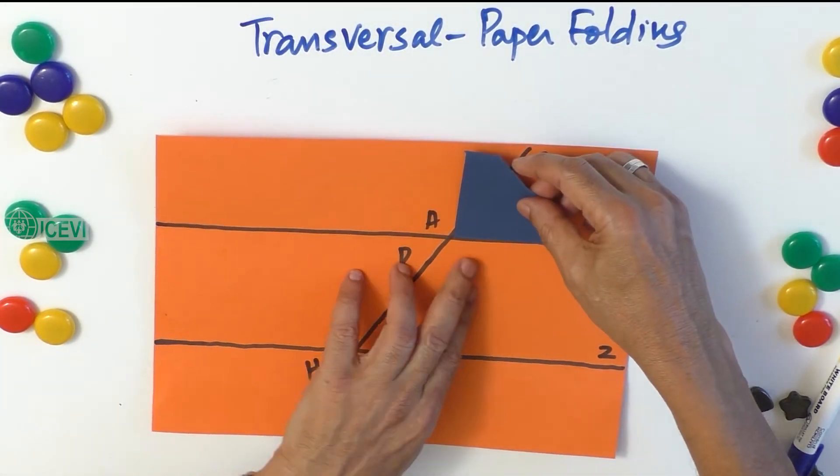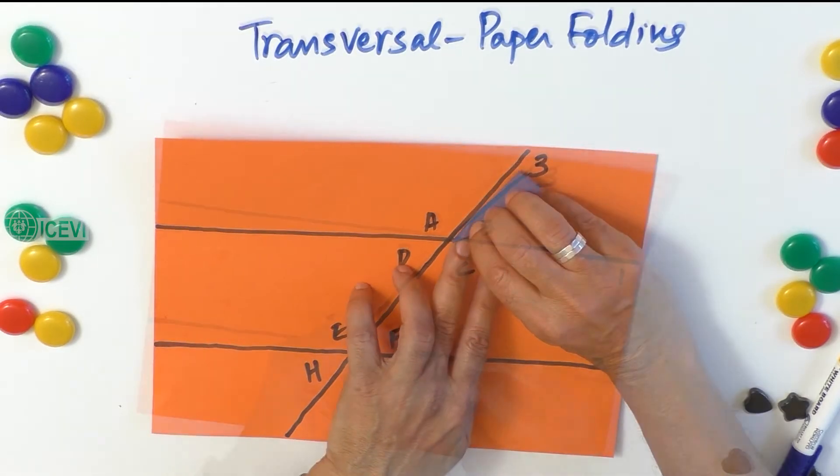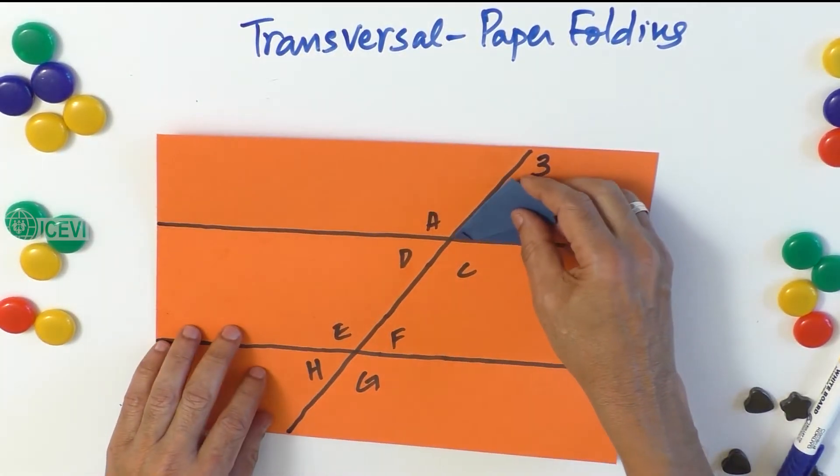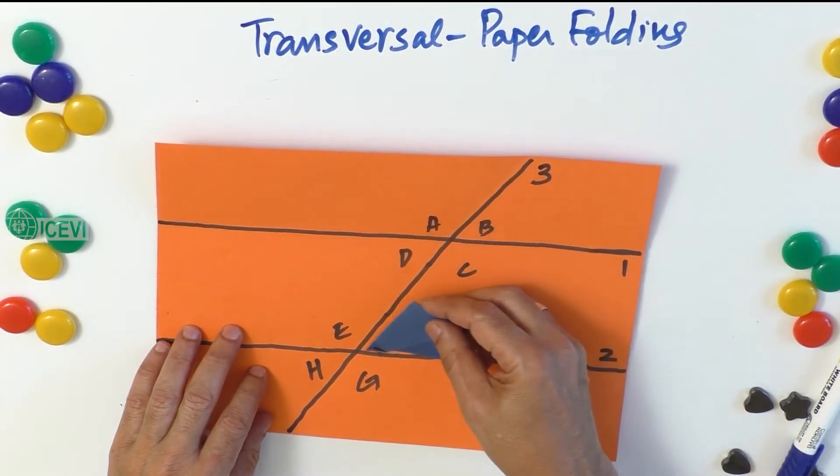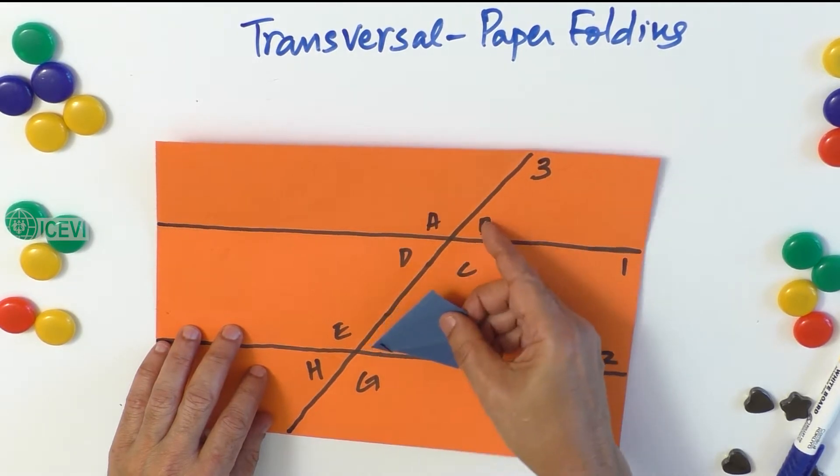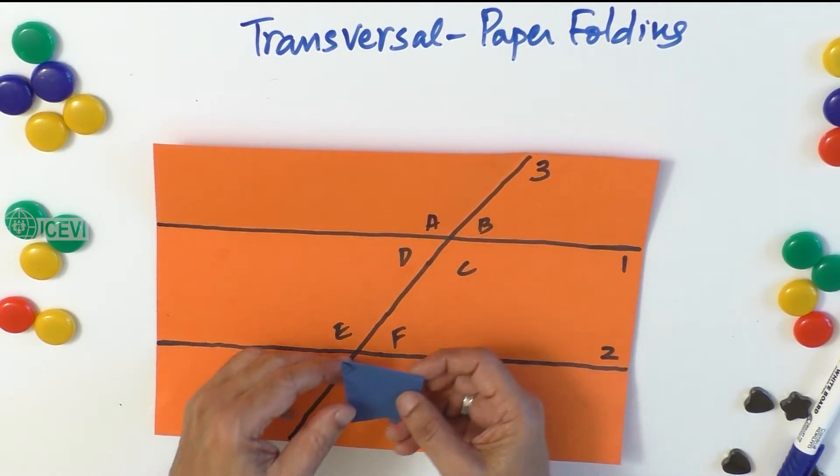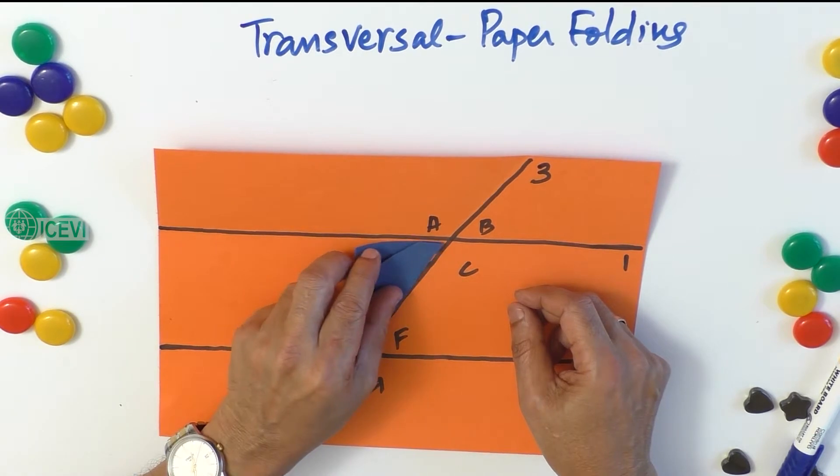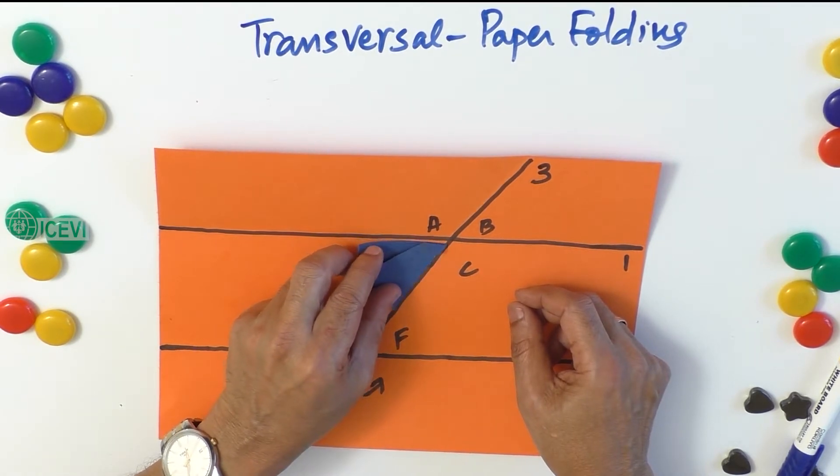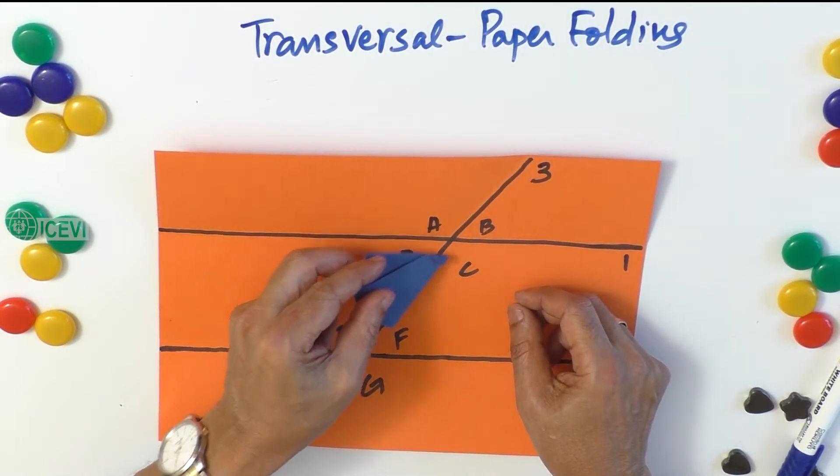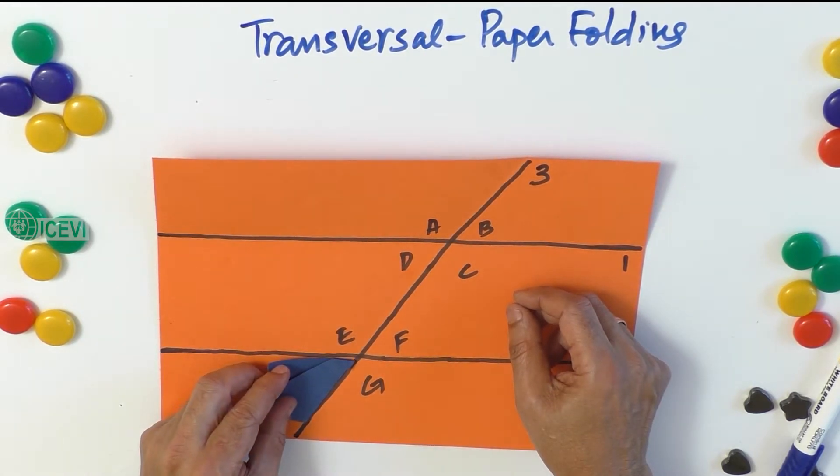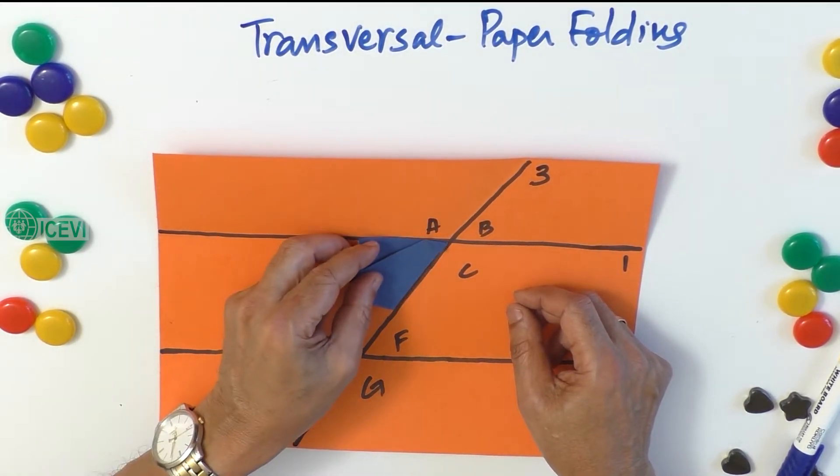Now this angle B is equal to angle F because they are corresponding angles. This angle is equal to angle D because it is vertically opposite angle, and D and H are corresponding angles. So H becomes the same as D.